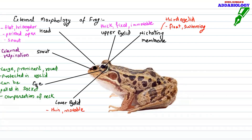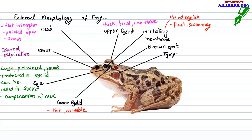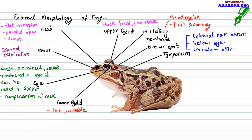Behind the eye there is a brown-colored spot, and near this brown spot we have the tympanic membrane, also called the eardrum of the frog. Frogs don't have external ears like we do. The tympanum is meant for hearing and catching sound. Remember: in frog, external ears are absent; below the eye, the tympanum is present with a circular oblique membrane.